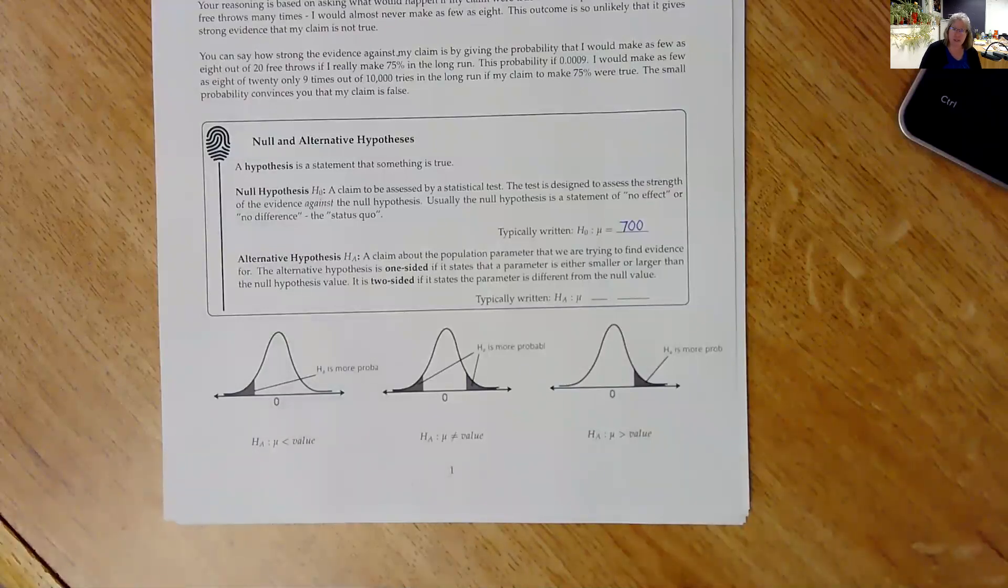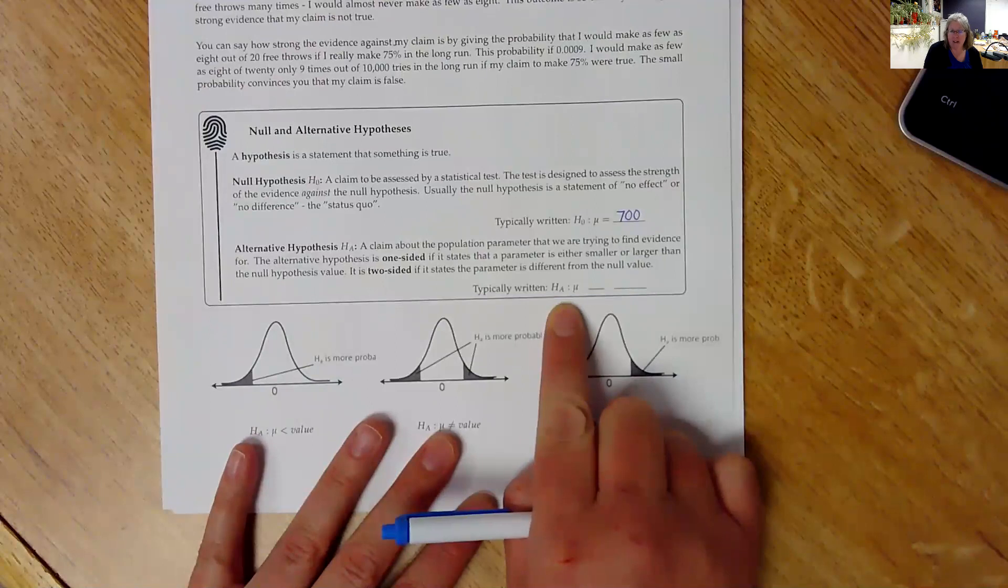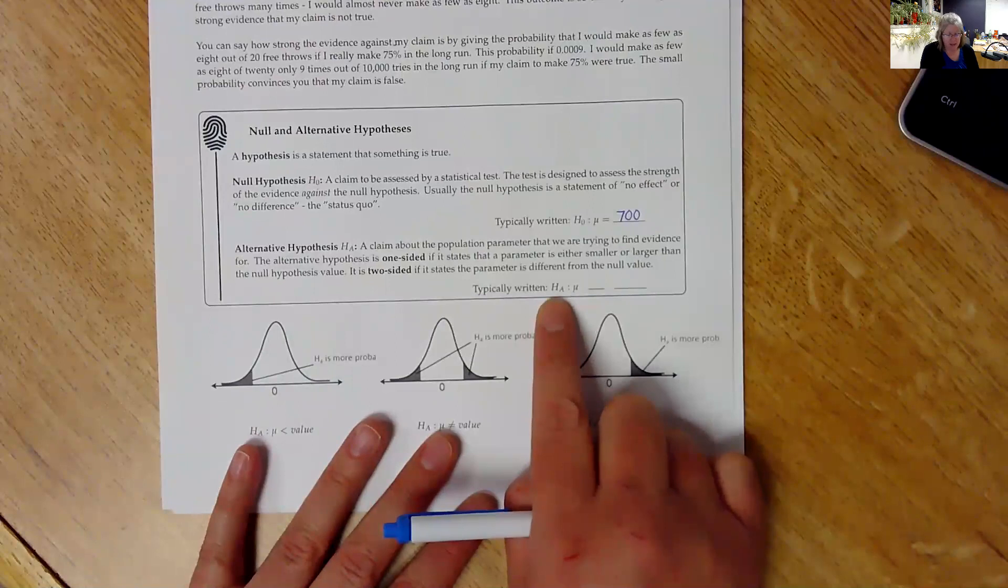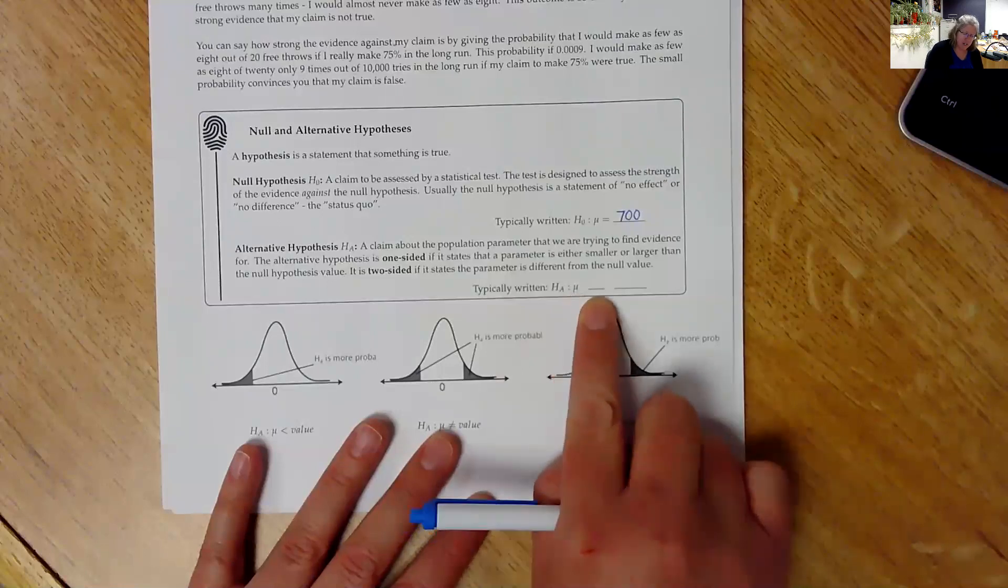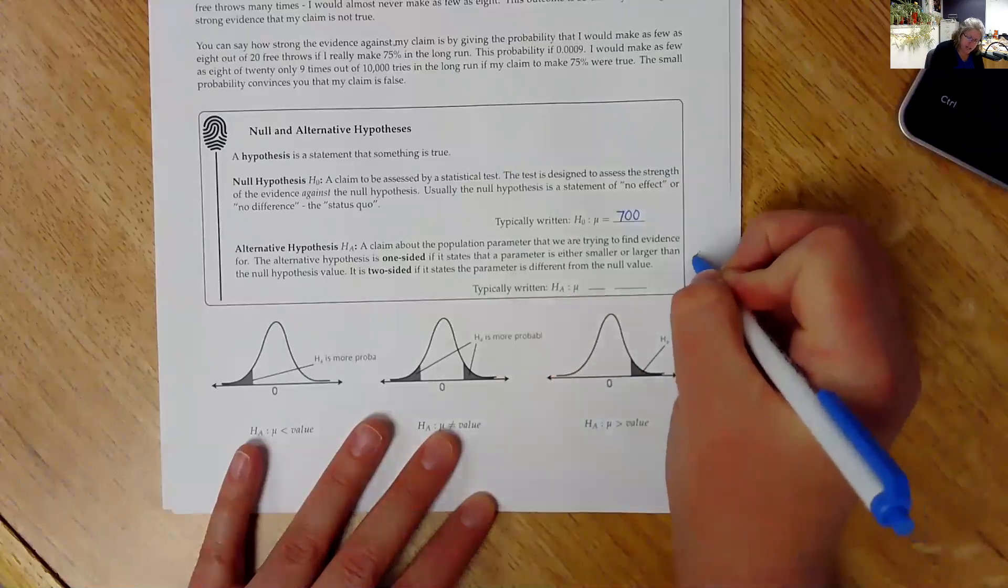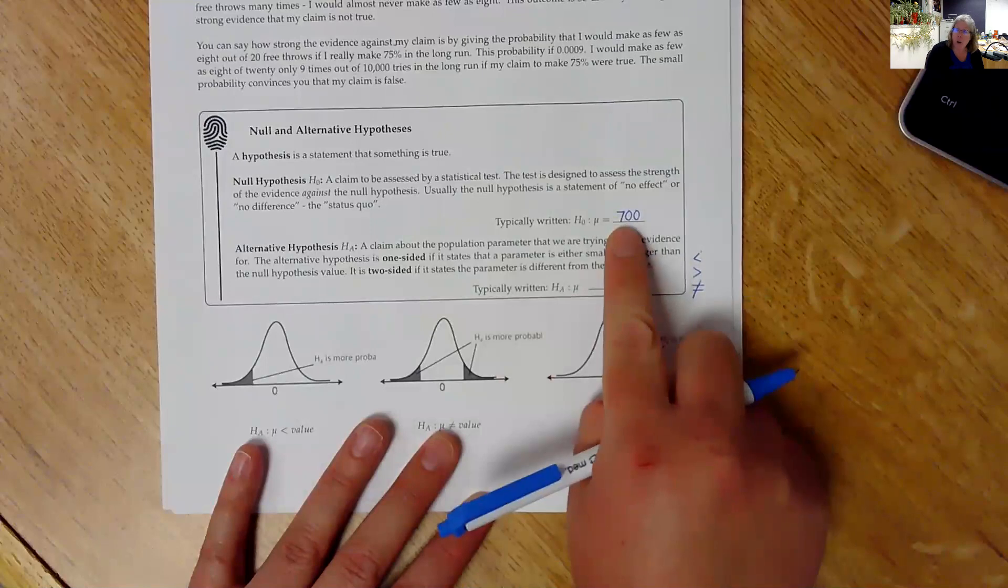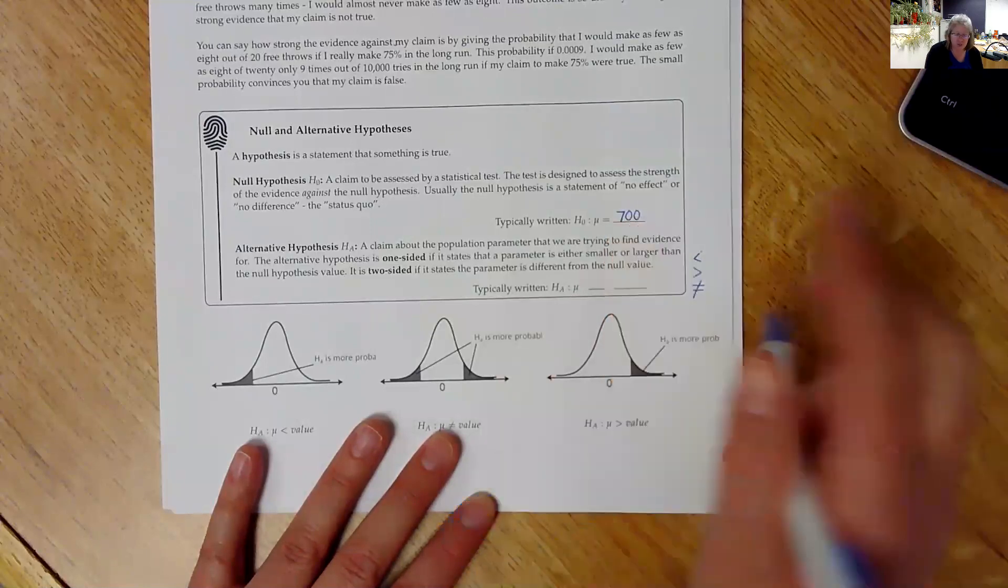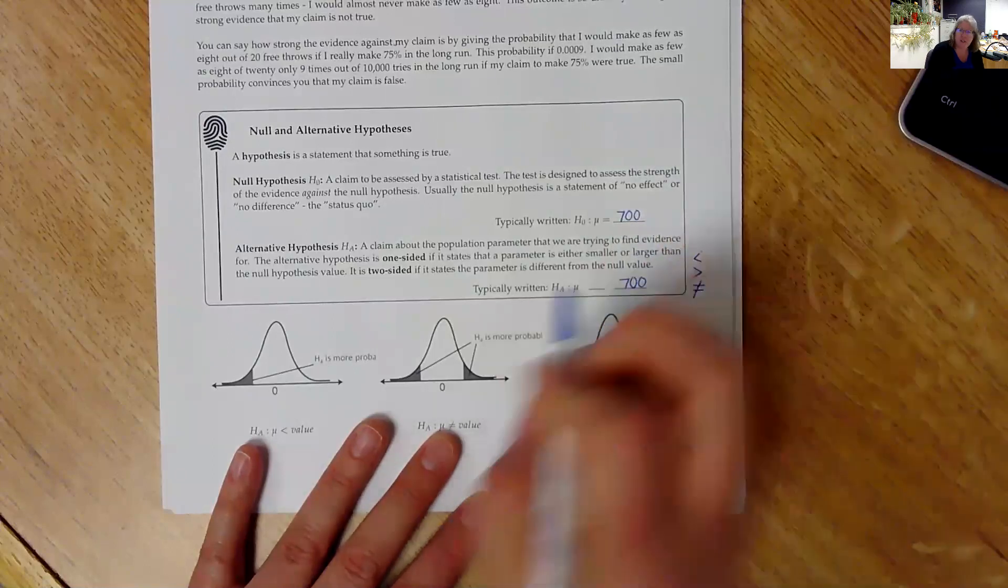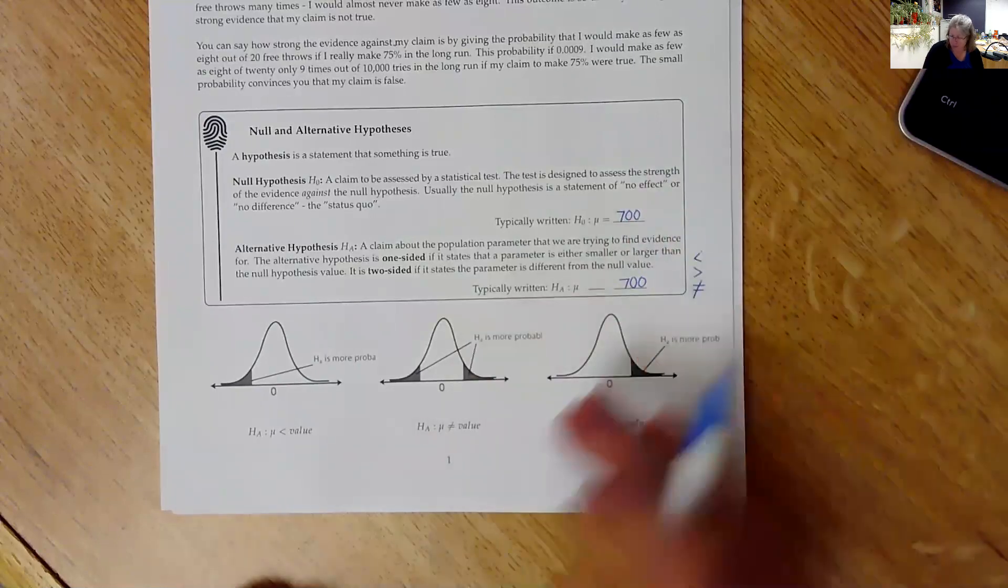So we have three symbols that you can use in an alternative hypothesis. H with a capital letter A is how we would denote that this is our alternative hypothesis. You need to make sure that you have your population parameter written here, so mu. And then you're either going to use a less than, a greater than, or a not equal to. And then this number is always the same as this number here. Once you've written down the number for your null hypothesis, it's going to be the same number that you use in your alternative hypothesis. That'll stay the same the whole way through both of those hypotheses.